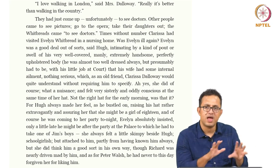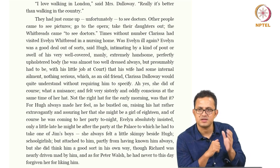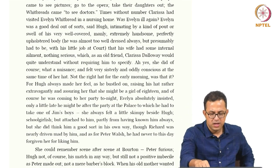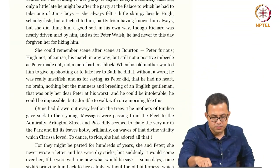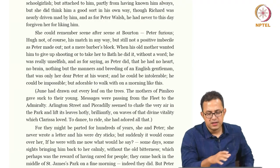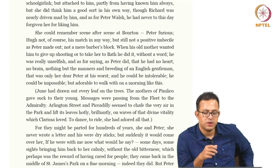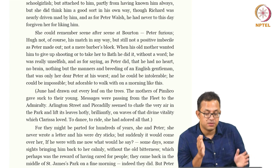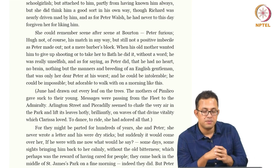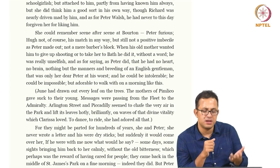We have an array of characters already given to us that is important to understand and unpack. We are told about the relationship between Clarissa and Peter Walsh — it is a very complicated relationship. We get a sense they may have been romantically involved at some point in time, but with life and circumstances they moved apart. Now Peter is back from India and she has always been in London.